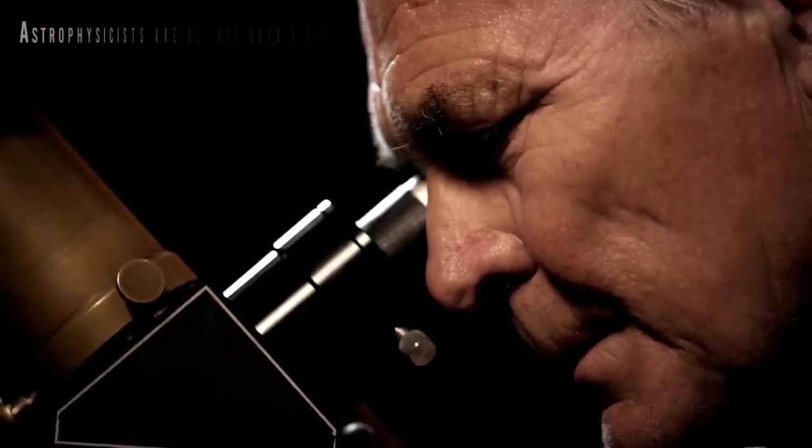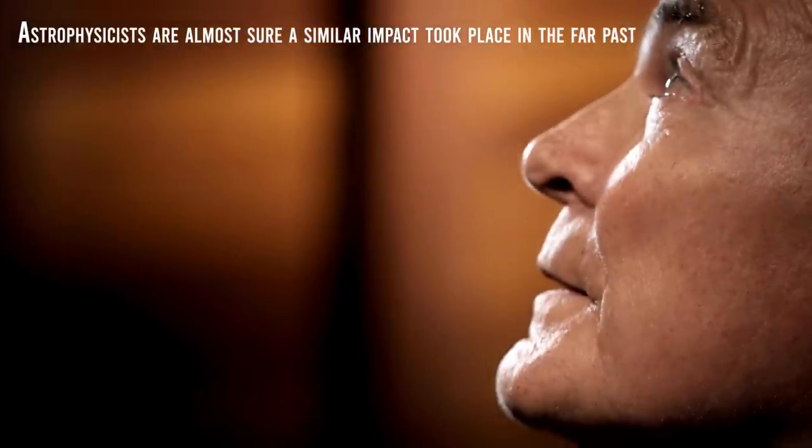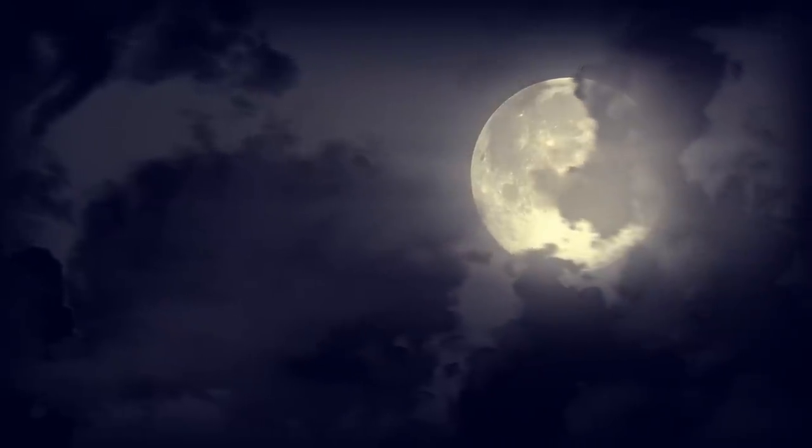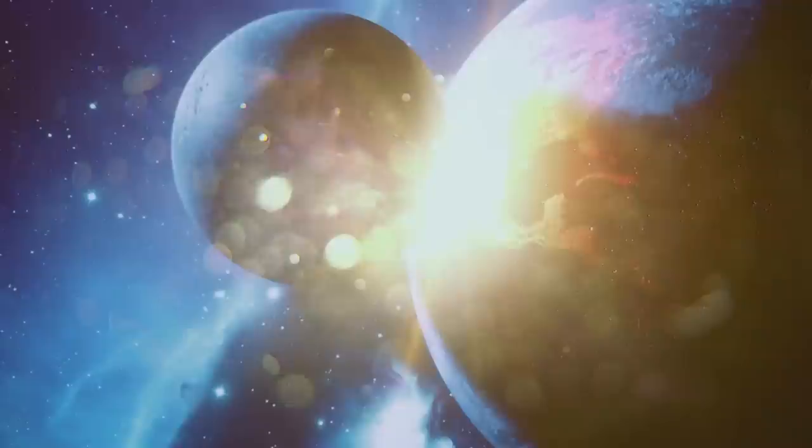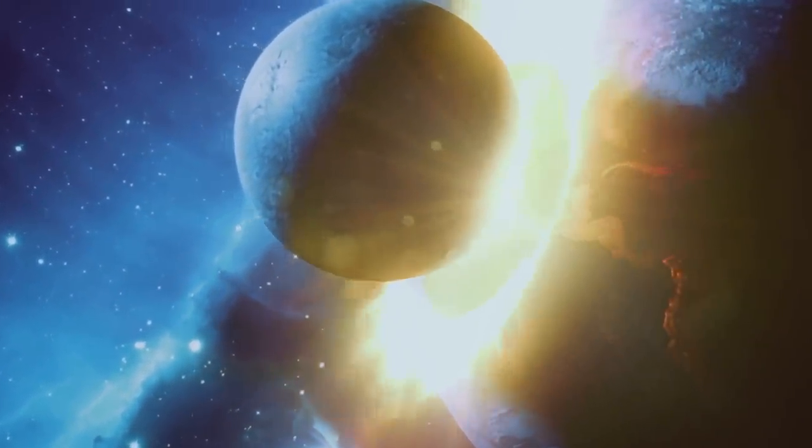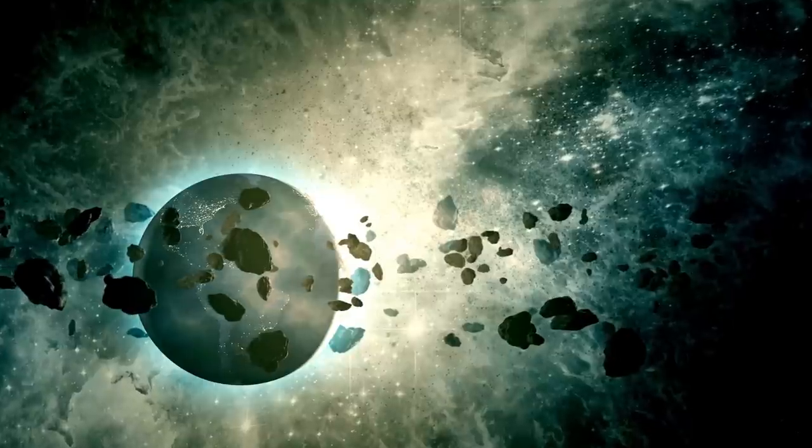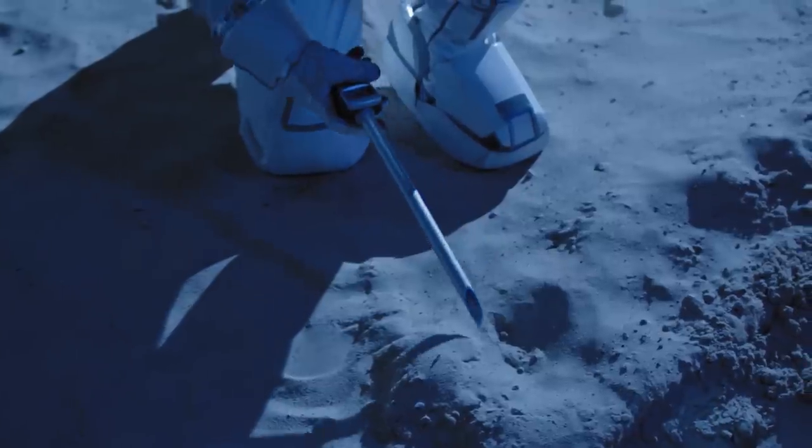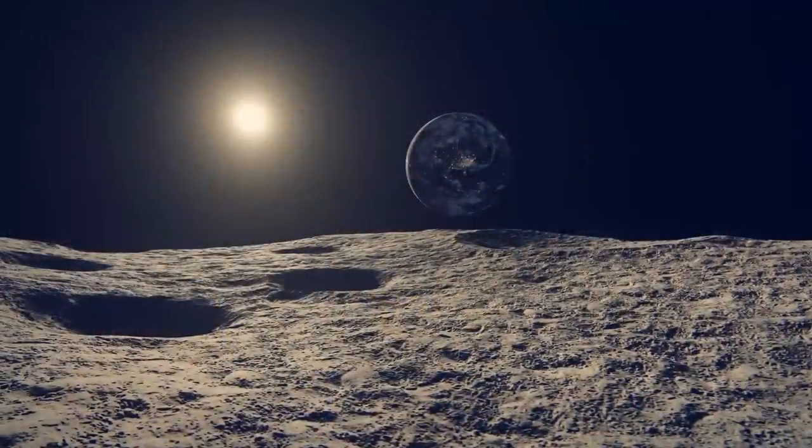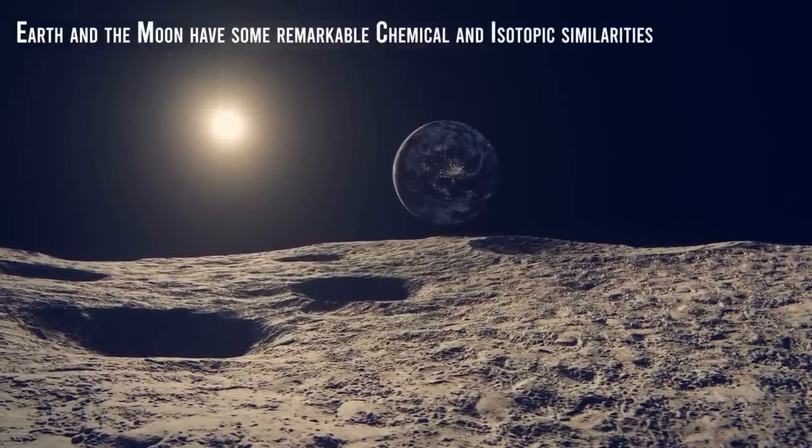But what's really interesting is that astrophysicists are almost sure a similar impact took place in the far past. And it created the Moon, our beautiful satellite. The so-called giant impact theory proposes that the Moon formed during a collision between the Earth and another small planet, about the size of Mars. The debris from this impact collected into an orbit around the Earth to form the Moon. Some evidence supports this theory. For instance, when the rock sample from the Apollo mission came back, they showed that the Earth and the Moon have some remarkable chemical and isotopic similarities, suggesting that they have a linked history.